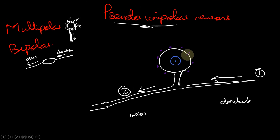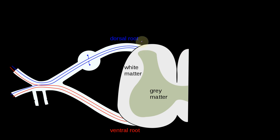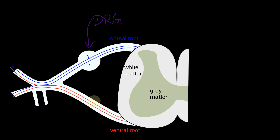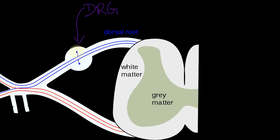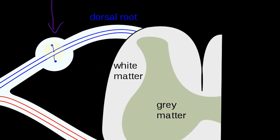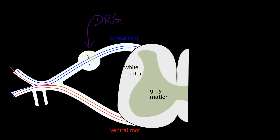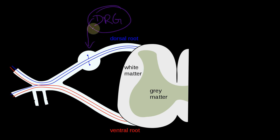That is about the pseudo-unipolar neuron. Now let us look at where this is seen. The pseudo-unipolar neuron is seen typically in the dorsal root ganglion, called the DRG. This is a section of a spinal cord — you can see a dorsal root and a ventral root. The ventral root does not have any ganglia, but the dorsal root has a ganglion, and you can see a structure showing the pseudo-unipolar neuron present there. This is a very common exam question: where are pseudo-unipolar neurons seen? The answer is the dorsal root ganglia.